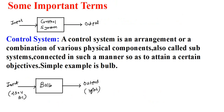Now there are some important terms related to control systems. Here is the general block diagram of a control system — like washing machines, air conditioners, bread toasters, and many more. An input is given to the control system. For example, if we are talking about a fan, we supply power to the fan and it gives an output. So in a control system, when we give input it produces output.